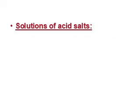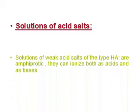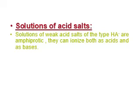Now we will discuss the pH calculation of solutions of acid salts. Solutions of weak acid salts of the type HA⁻ are amphiprotic — they can ionize both as acids and as bases. A very famous acid salt is the bicarbonate anion HCO₃⁻. The hydrogen atom in the anion structure makes the salt an acid salt. A very famous example of acid salts is the bicarbonate salts, and we will discuss how to calculate the pH of solutions such as sodium bicarbonate.